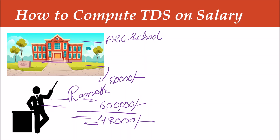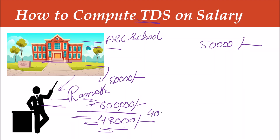So the government introduced TDS. It said that if any employer — any school, any company, any college or any other organization — pays salary to an employee like Mr. Ramesh whose taxable salary is 6,00,000 rupees, it is the employer's responsibility to deduct TDS. The school will deduct TDS from Ramesh's salary. Since the tax payable is 48,000 rupees per year, the monthly TDS deduction will be 4,000 rupees per month.